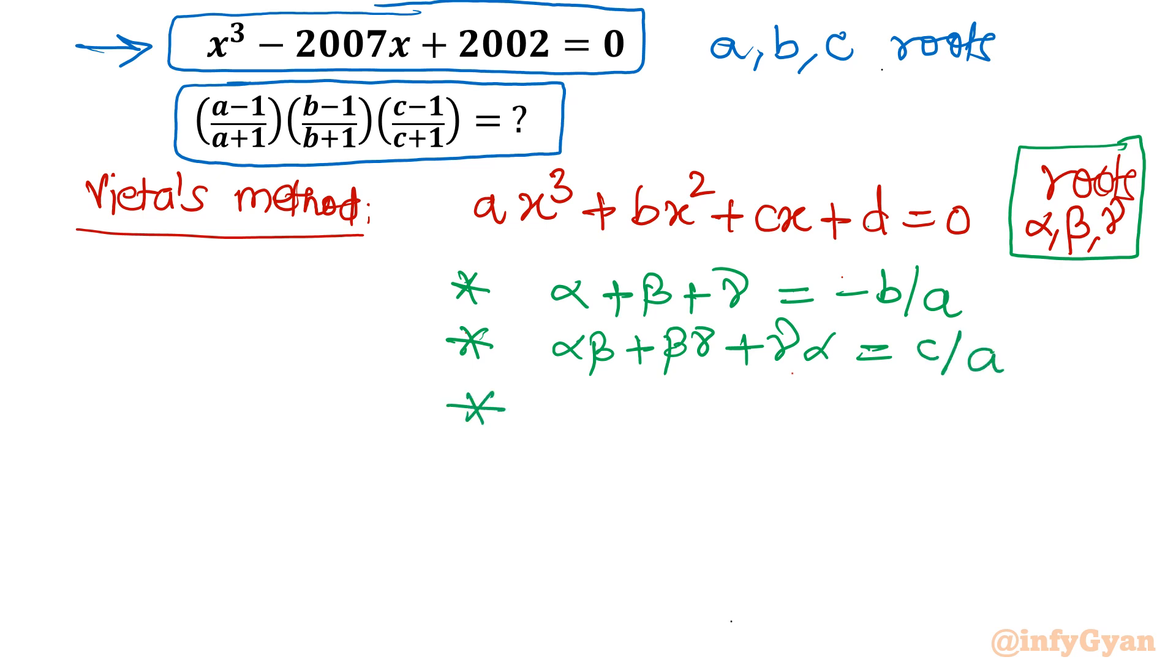Third equation: product of all three roots. That is equal to constant coefficient over leading coefficient with minus sign, so minus d over a.